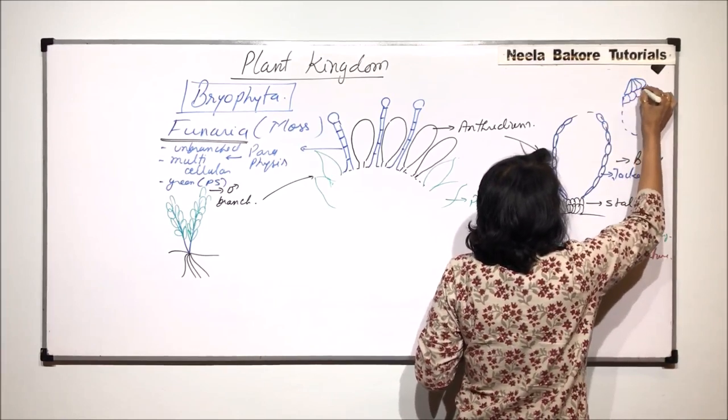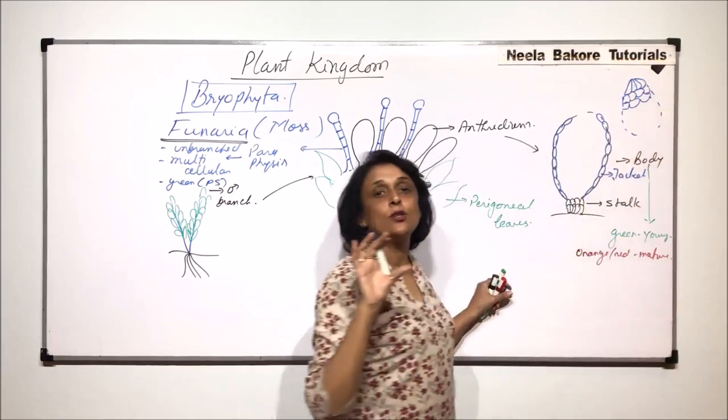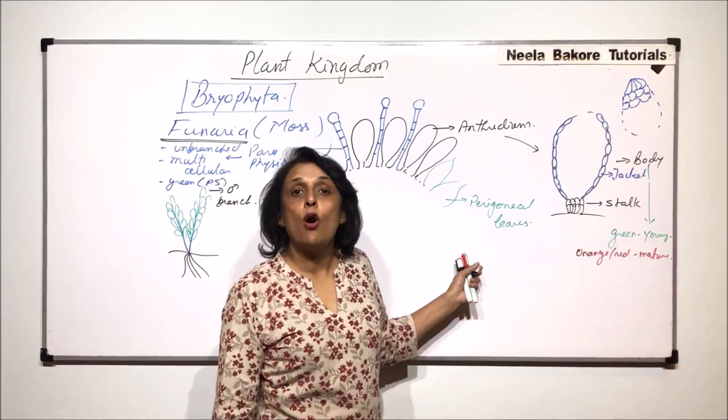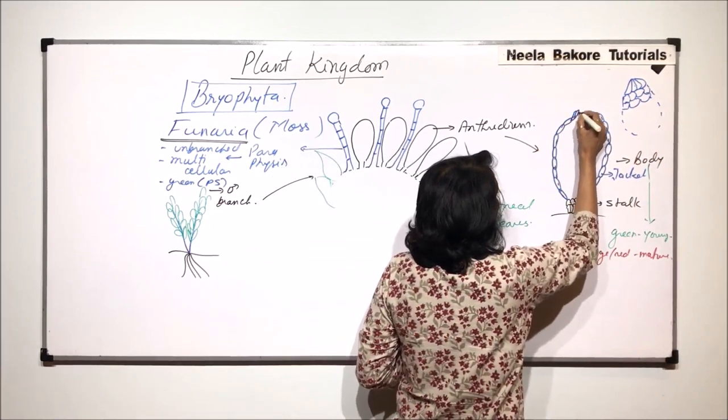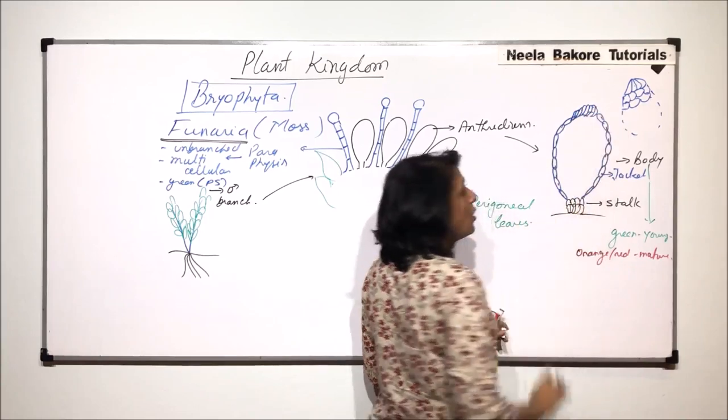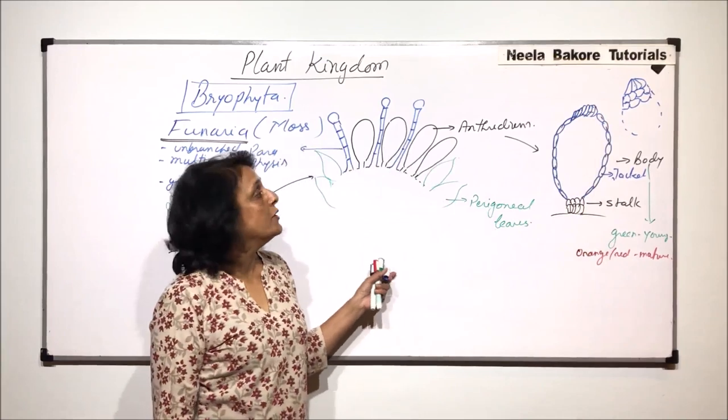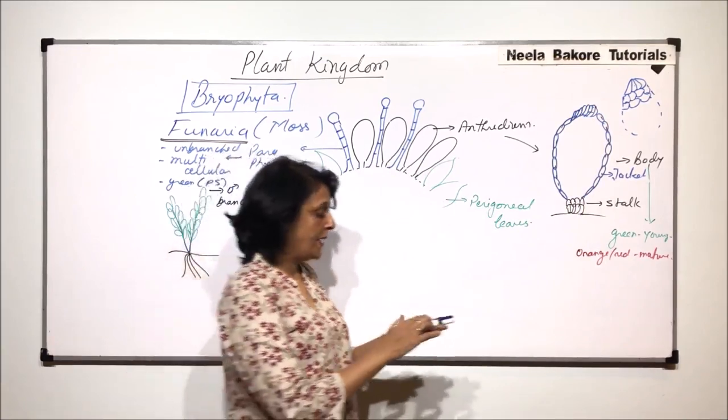These columnar cells make the operculum. Here we are going to make few tall cells. Their number is less and they make the operculum. It is a lid which is going to open and the male gametes would be released.